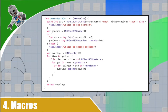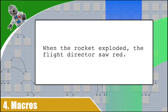For example, take the following sentence: 'When the rocket exploded, the flight director saw red.' That's an ambiguous statement. Did the flight director see a red color? Was the flight director angry? What does red mean in that context? This is part of the joys of written language — these ambiguities can oftentimes provide deeper meanings. Well, computers don't like ambiguity. They hate it. Instead, we write in a shorthand language that is meant to be clear.